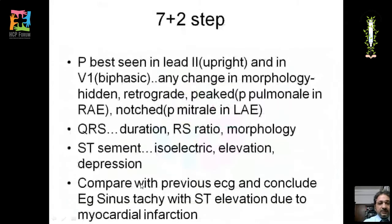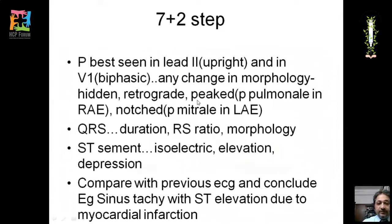P wave morphology is best seen in lead II where it should be upright, and in V1 it is biphasic. Note any change in morphology — whether the P wave is hidden, retrograde, or peaked. A peaked P wave is found in right atrial enlargement (P pulmonale), and a notched P wave in left atrial enlargement (P mitrale).